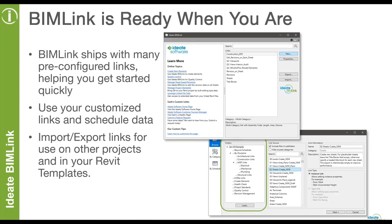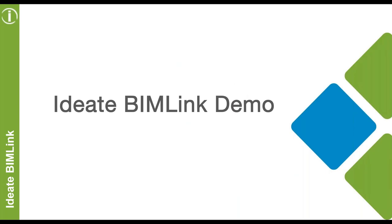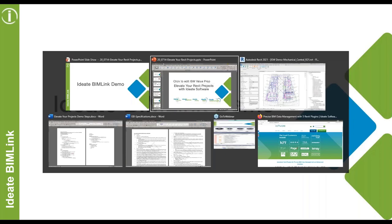We ship BIMLink with a lot of pre-configured links. If you want to edit something in your Revit model but aren't sure where to start, use one of our links. You can customize these links — add or remove parameters as you see fit — and then bring that information back into your model once you make the edits. Let's go ahead and take a look at some demonstrations of how BIMLink can help you with your Revit models.